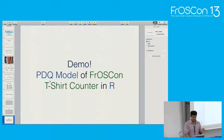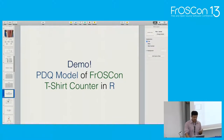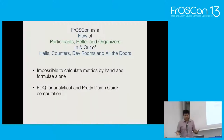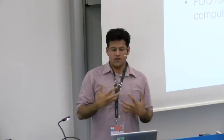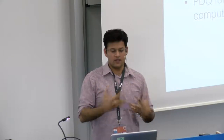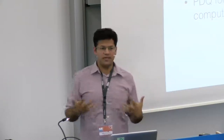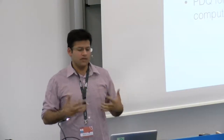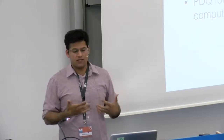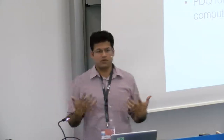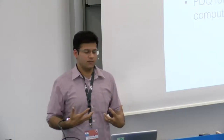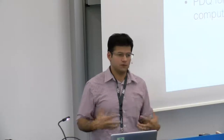You might think: if we can already do this by hand, what's the need for PDQ? Imagine FrostCon as a flow of participants, organizers, and speakers coming in and out of halls and counters at dev rooms. If we were to characterize the queuing nature of all the counters or even the rooms, that would be almost impossible to solve by hand. That's where PDQ comes in—it takes an analytical approach. In fact, PDQ stands for 'Pretty Damn Quick.' Think about FrostCon as a network of queues; that's where analytical tools like PDQ are indispensable for doing any meaningful performance analysis.